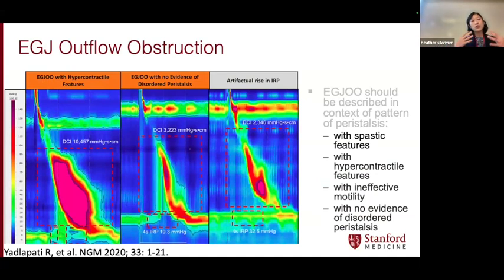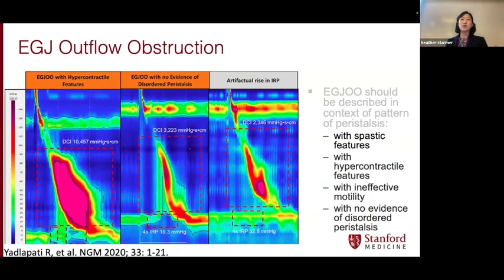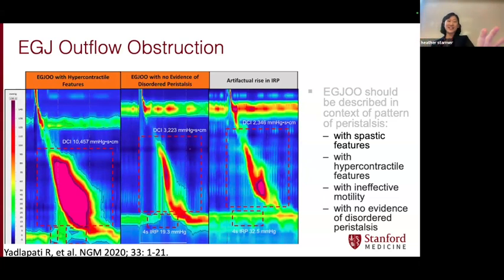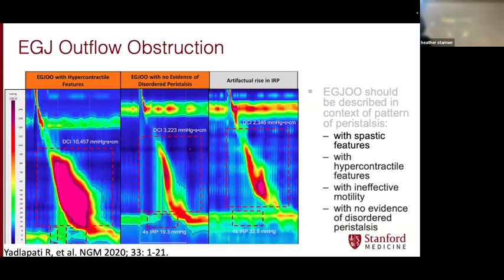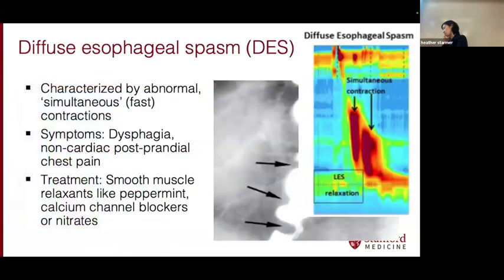I want to familiarize you all with other disorders of motility that we see all the time in our practice. For the majority of what I'm going to discuss, we diagnose these by doing manometry, but what's essential is that patients will have to have symptoms. If patients just incidentally have these findings — we see this a lot in our lung transplant patients — but they don't have any symptoms, then no further follow-up is warranted. EGJ outflow obstruction is incredibly common. It means you have normal peristalsis, but the LES is not relaxing all the way. Patients will oftentimes have dysphagia and non-cardiac chest pain post-prandially. Treatment is oftentimes directed at the lower esophageal sphincter or we'll use smooth muscle relaxants to help relax the esophageal sphincter.